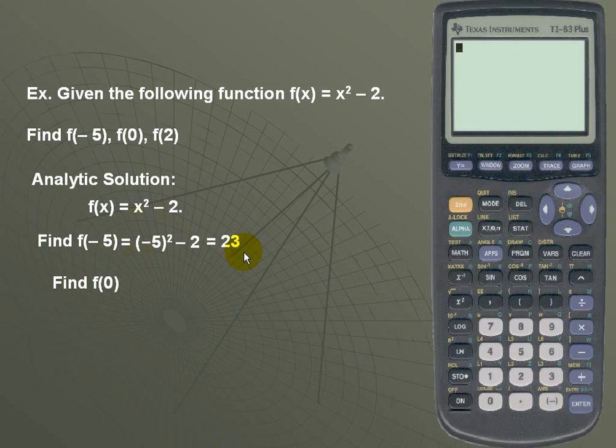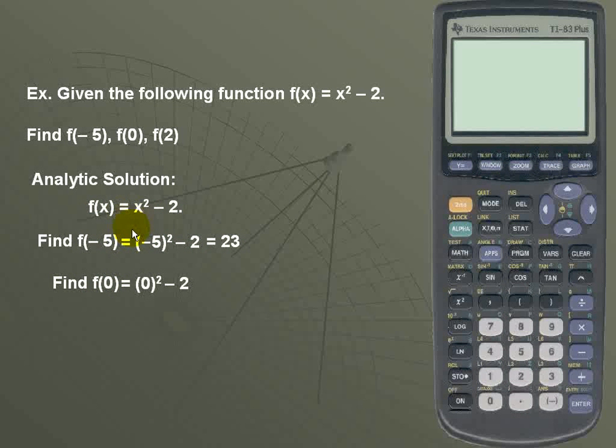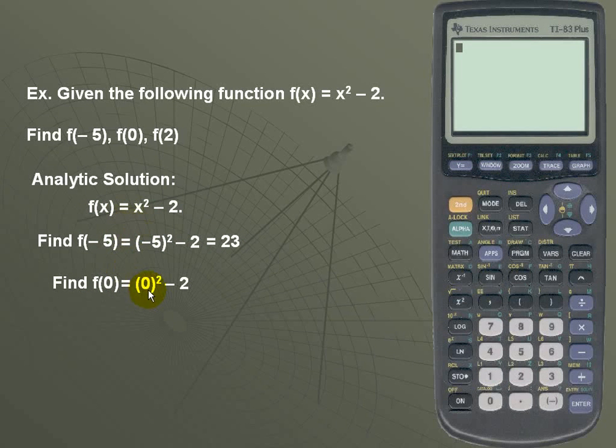Likewise, to find f of 0, we'll once again return to our main f of x function and replace 0 with x. So we have 0 quantity squared minus 2 for a result of negative 2.